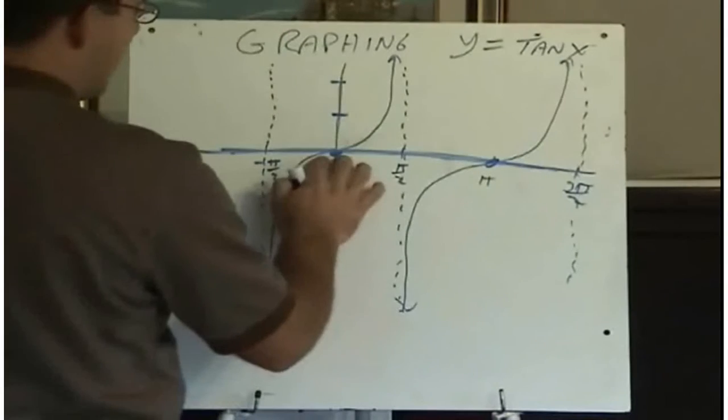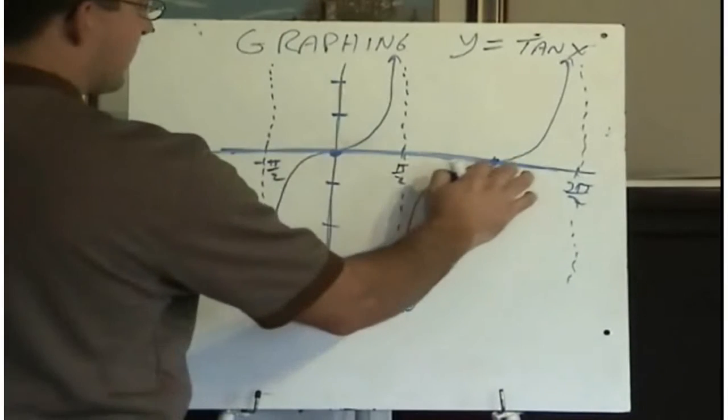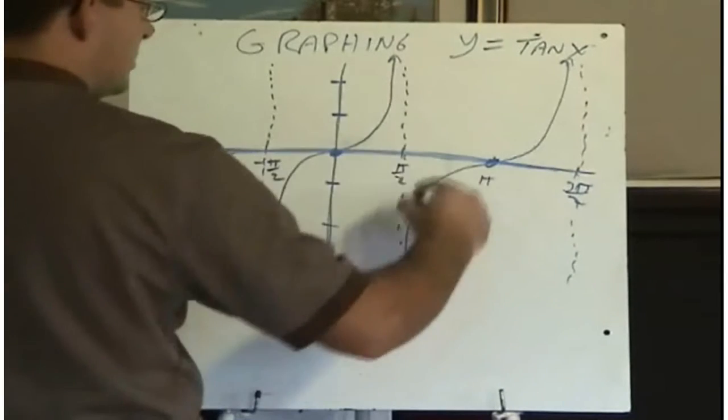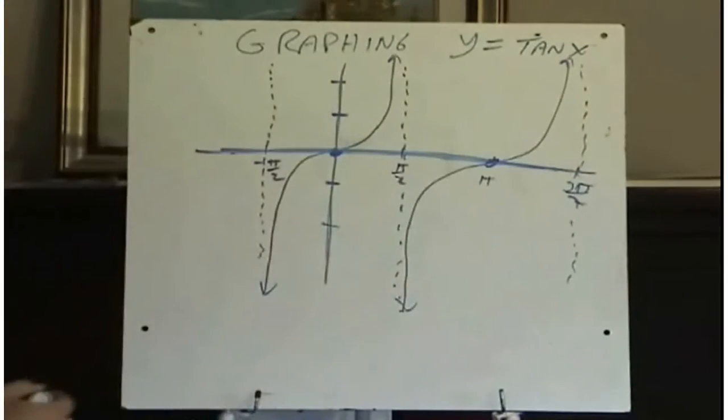So one of the properties of this is it has intercepts every pi. So every pi, we've got one of these curves crossing the x-axis. So this is a graph that you need to make sure that you have down in your journal.